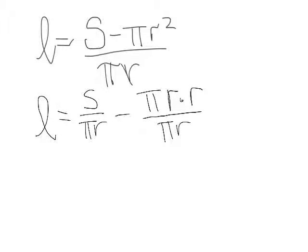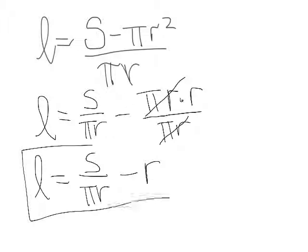Now you can see in the numerator and denominator, I have a common factor of πr. So when I write this in simplest form, the first fraction minus, and what's left over is just r. So now I've solved this equation for l and I'm going to use that and the numbers that the book gave to find that lateral distance.